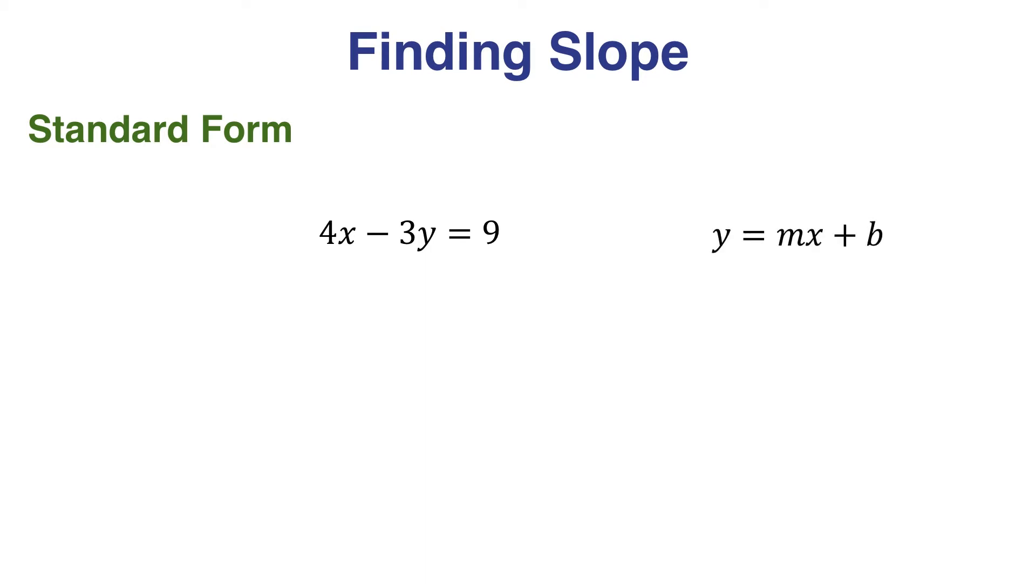We know in the y equals mx plus b form that m is the slope. So let's solve this equation for y. To get y by itself, let's subtract 4x from both sides first.